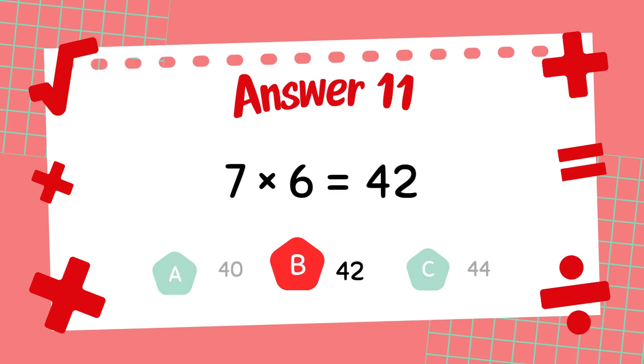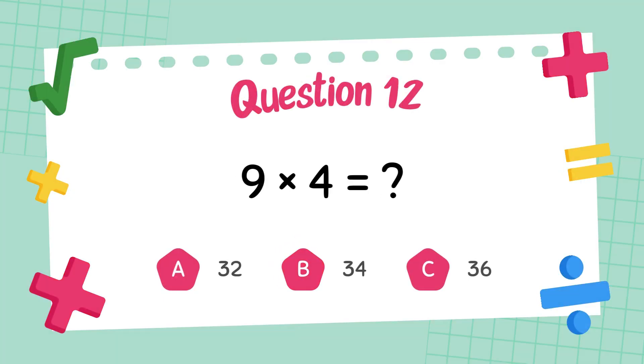The answer is 42. What is 7 times 6? The answer is 42.